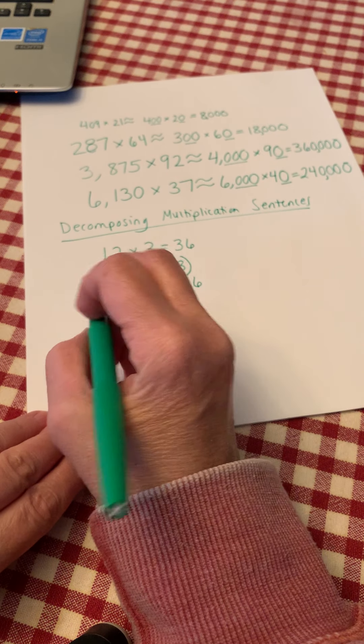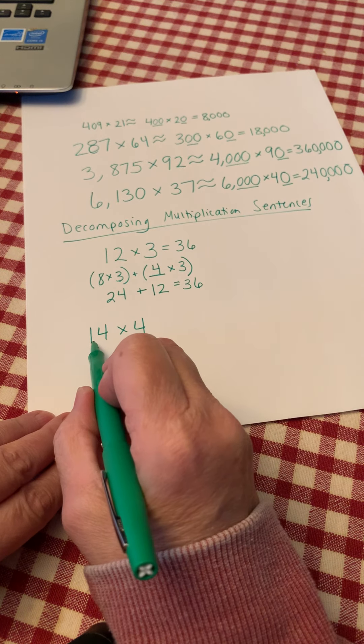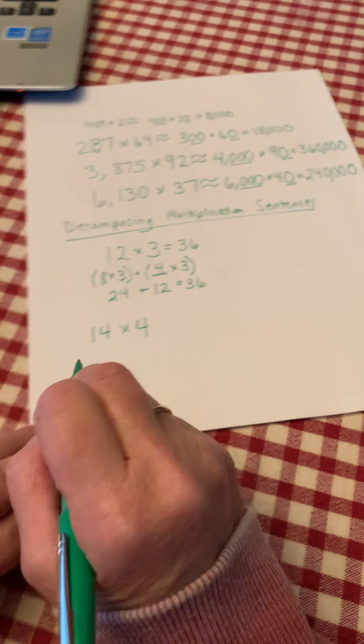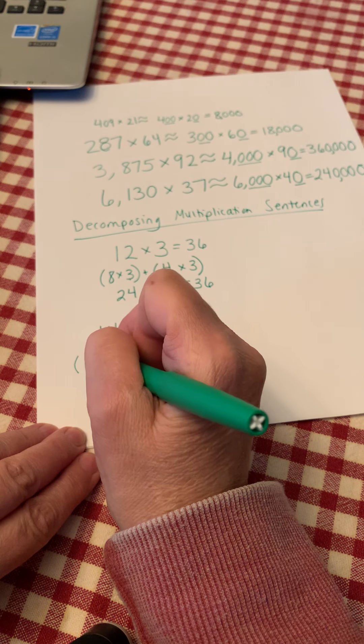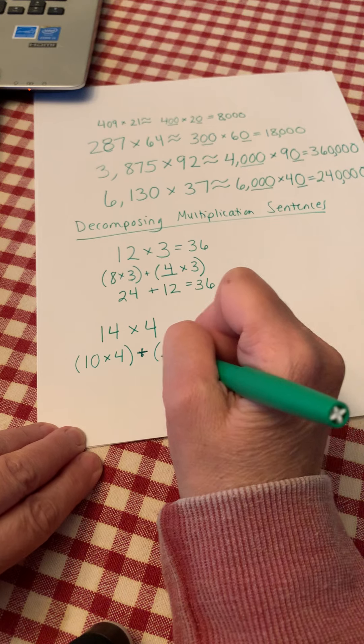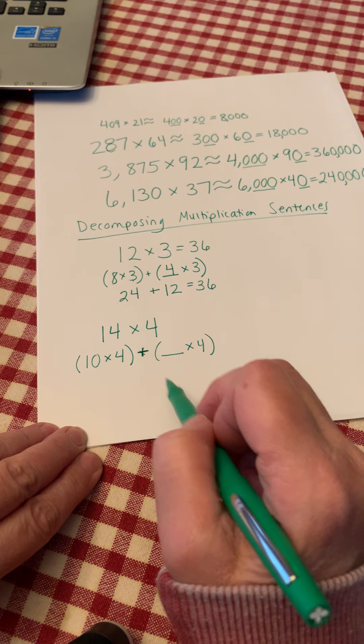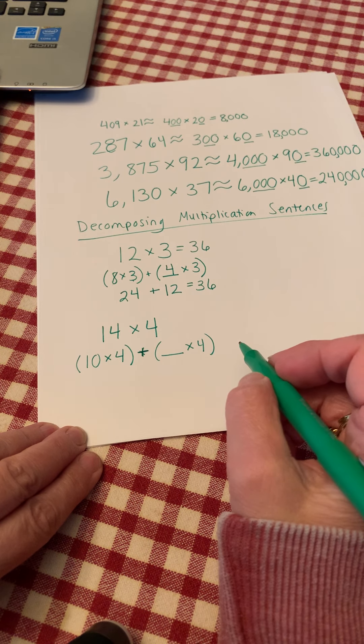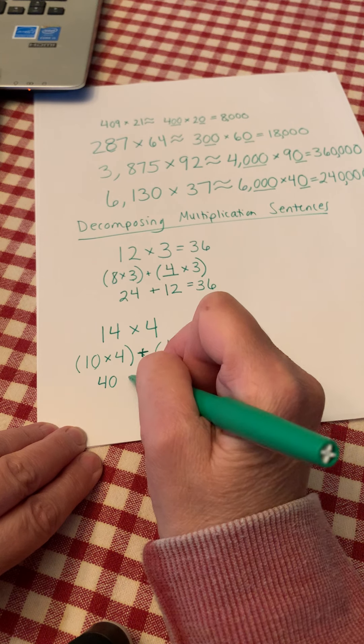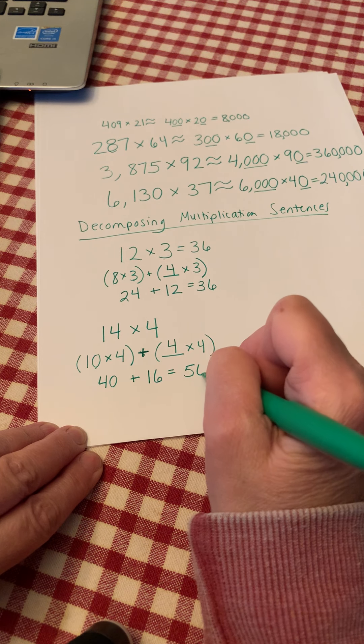Let's try one that you probably don't know in your head. 14 times 4. We can decompose 14 to make this an easier multiplication sentence. So instead of saying 14 4s, I would take out a 10 because I know what 10 times 4 is. And then I would say plus what times 4? 14 4s is equal to 10 4s plus how many? What number plus 10 will give me 14? That's right, 4. 10 times 4 is 40, 40 plus 4 times 4 is 16, 40 plus 16 is 56.